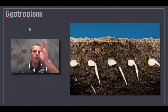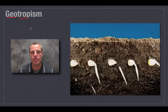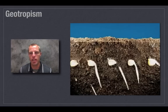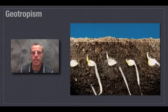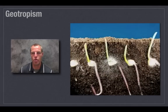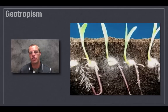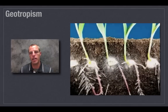If something is growing up against gravity or away from the earth, we call that a negative geotropism. Let's watch this example — we have some seeds germinating, with roots going down and shoots coming up through the dirt.